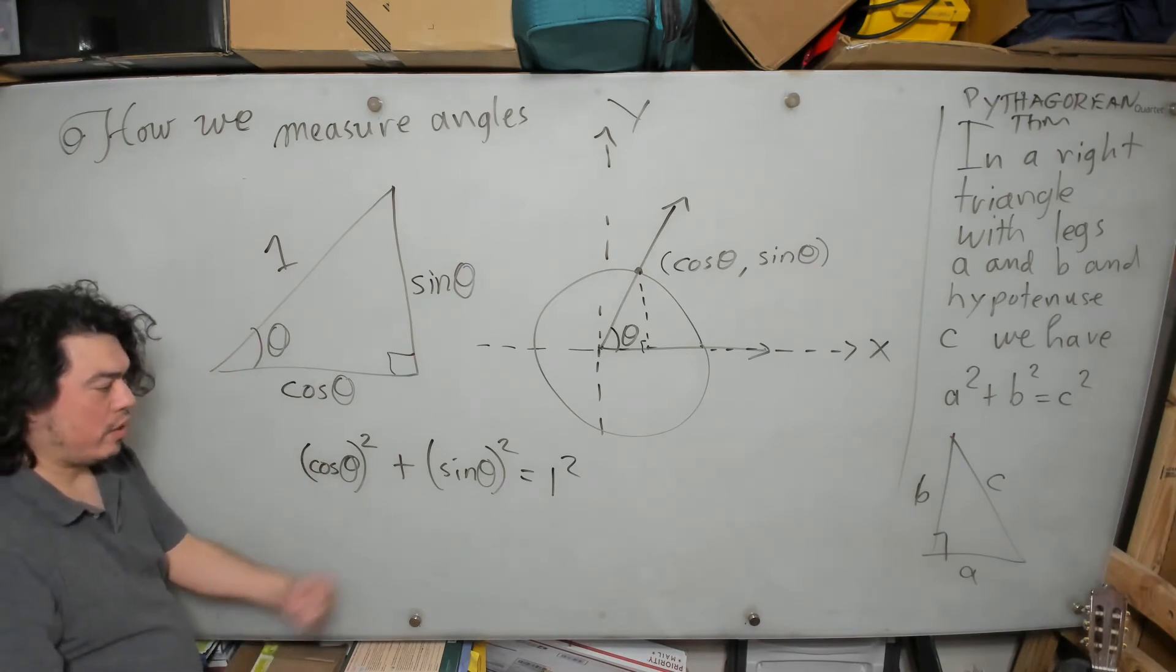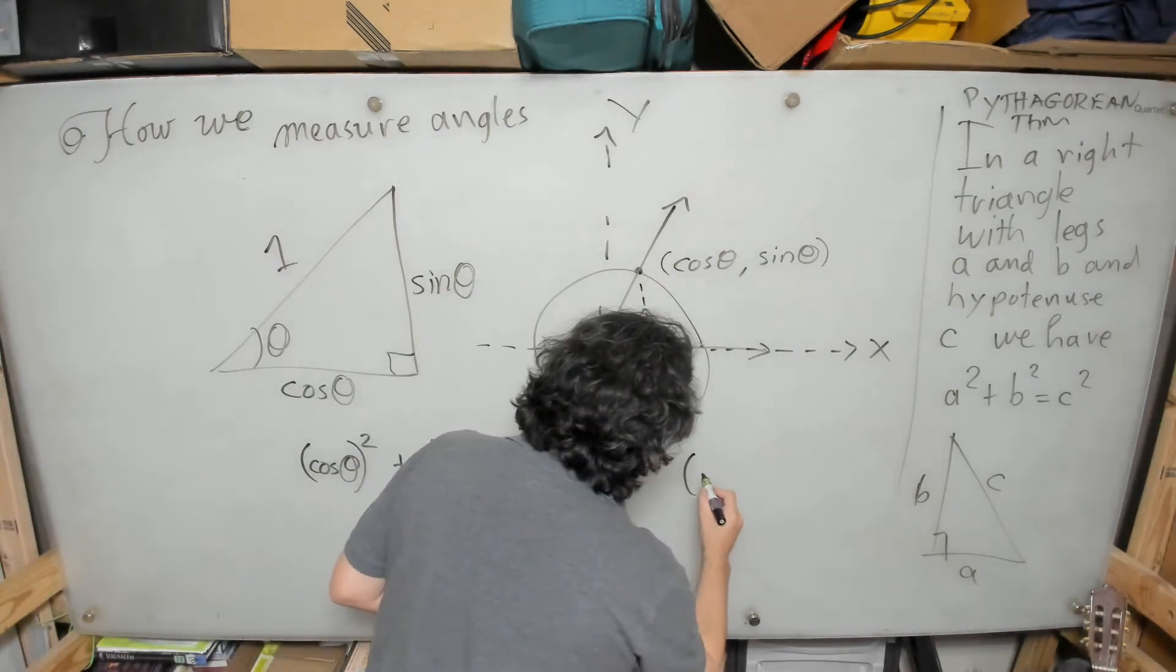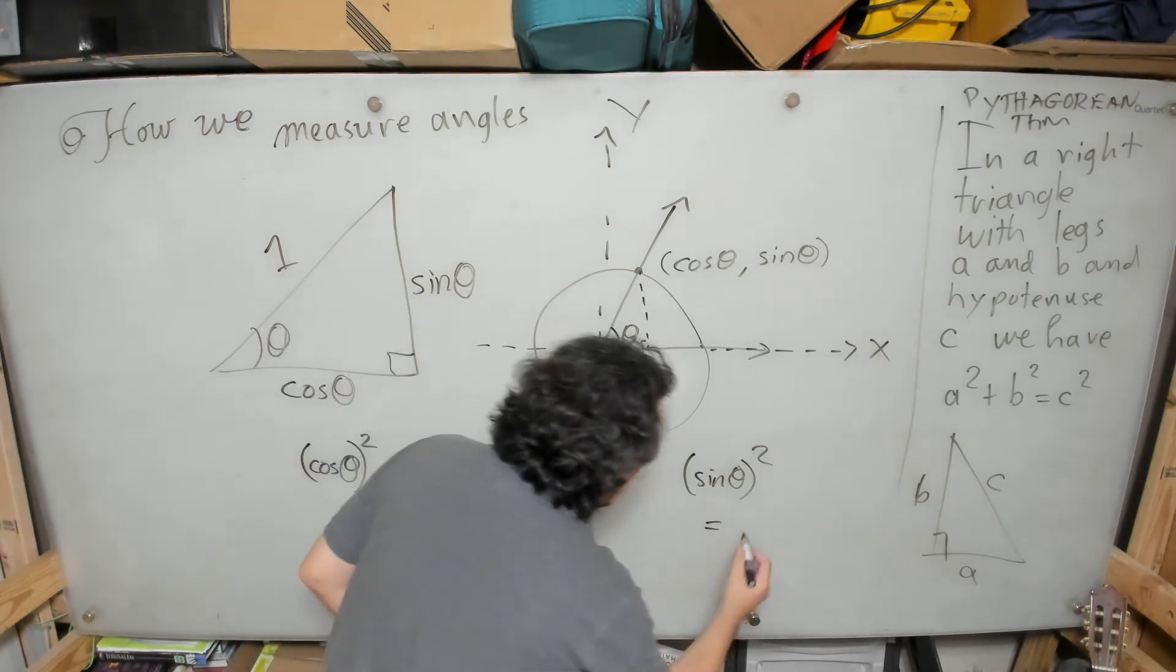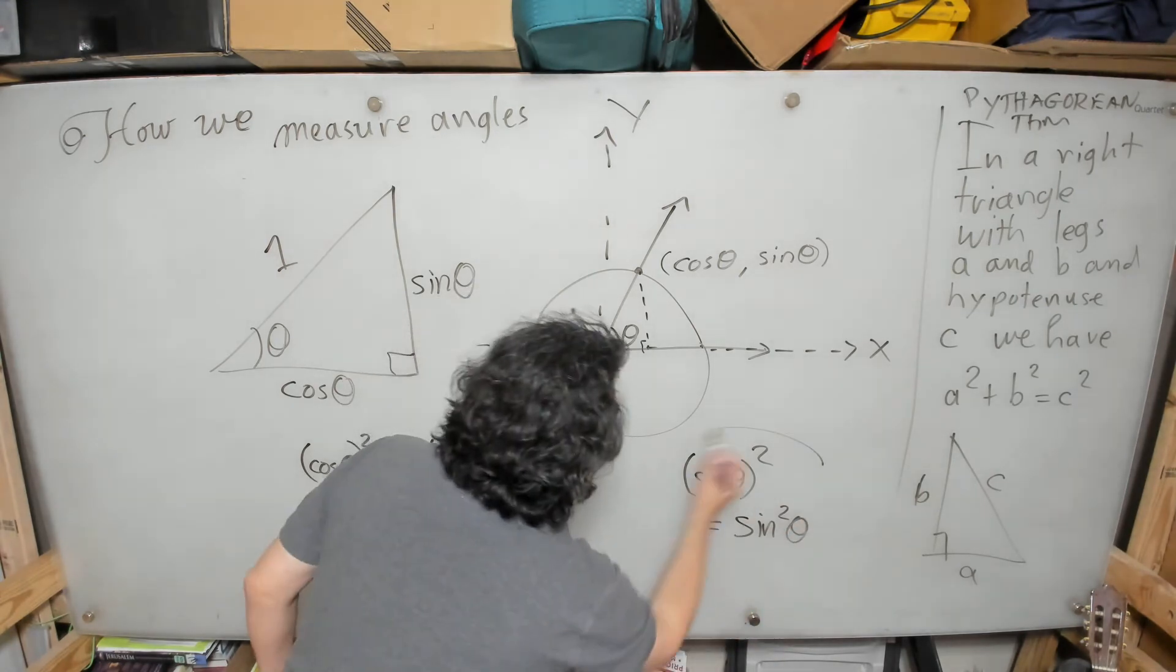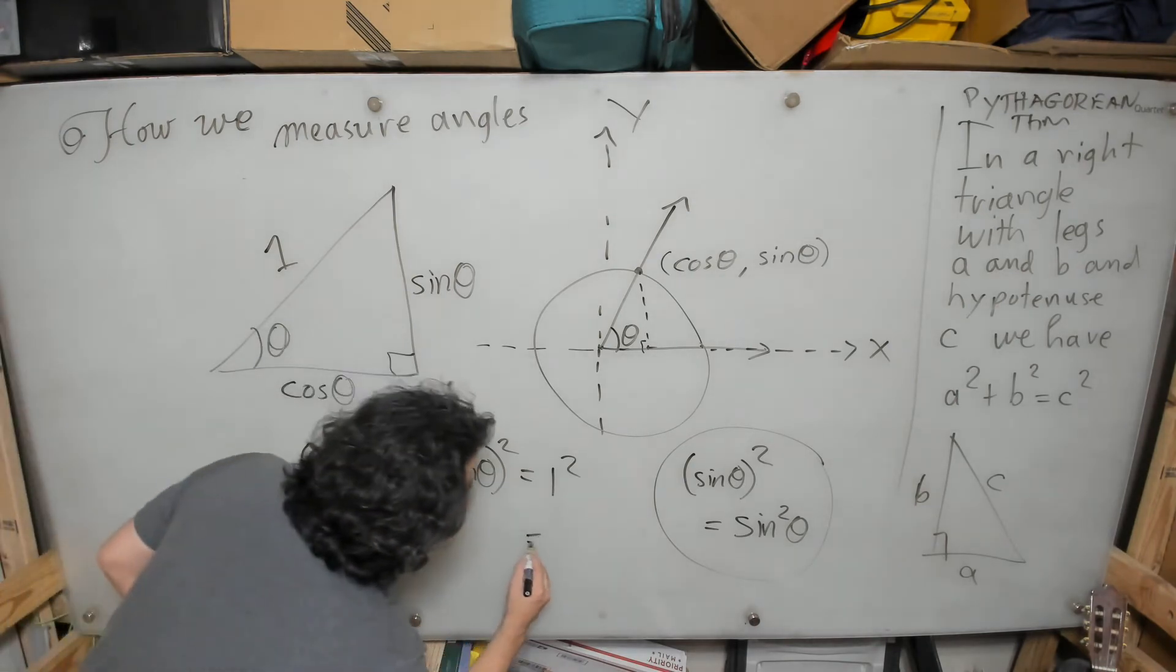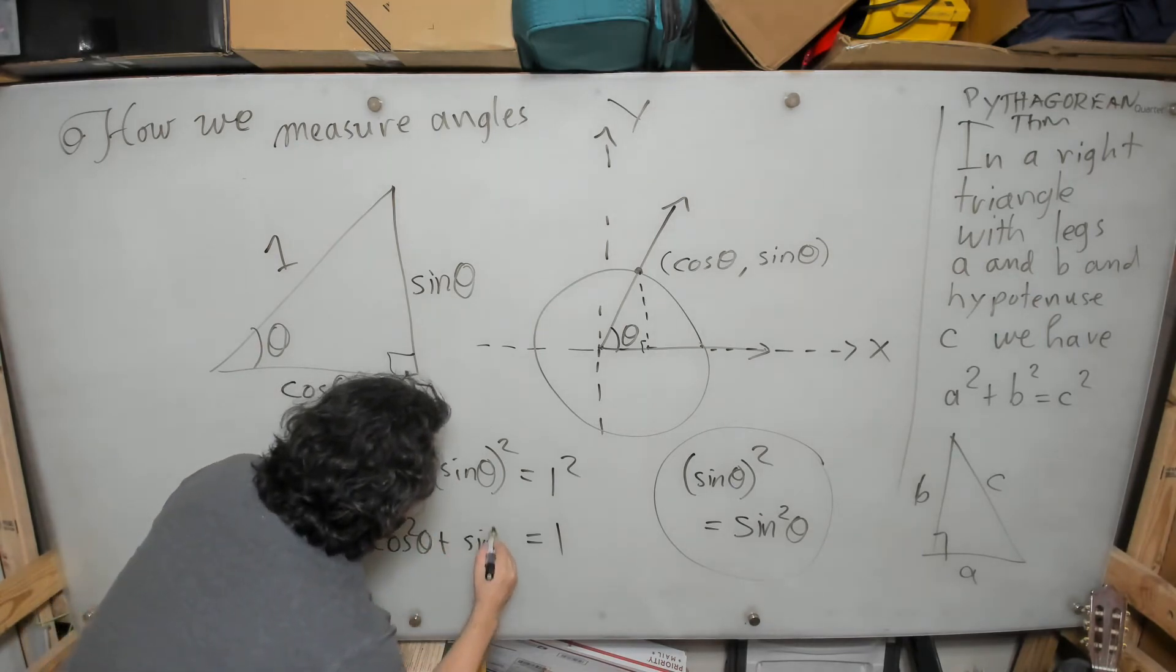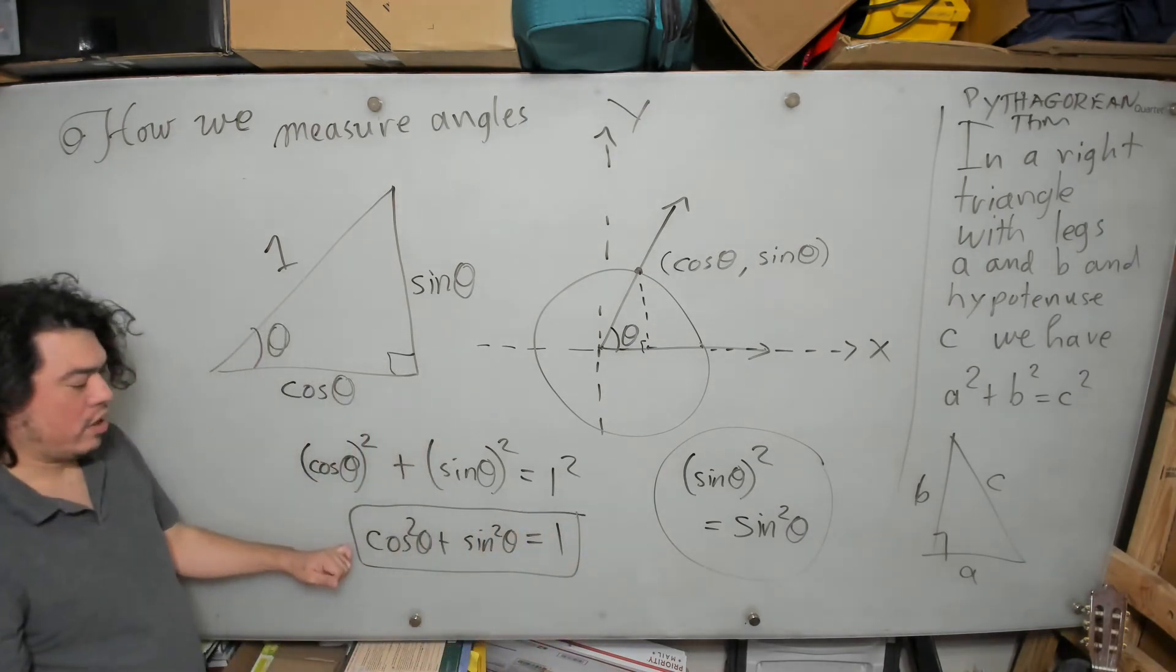The sum of the squares of the legs is equal to the square of the hypotenuse—that's what this is. Now here I'm going to make a notation. Whenever you see sine theta squared, we're going to use this shorthand, and you'll see this in any trig book—that is actually written as sine squared theta. So that's a shorthand for this. So this relationship—what is one squared? One squared is one times one, so it's just one. The cosine theta squared, that's going to be written as cosine squared theta plus this will be written as sine squared theta.